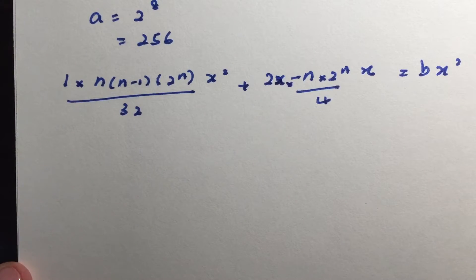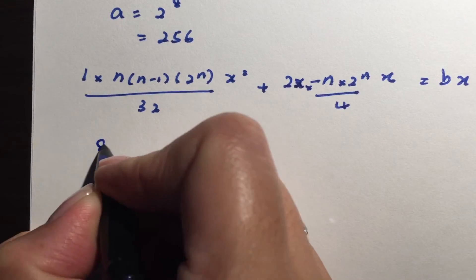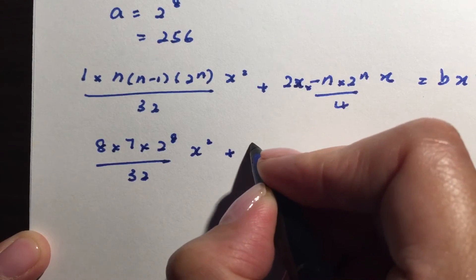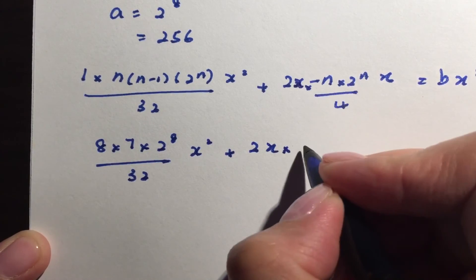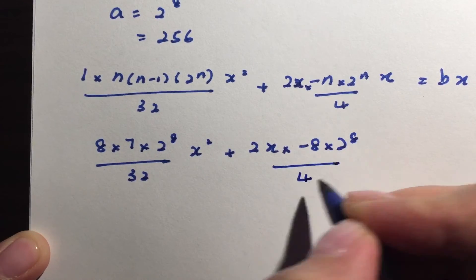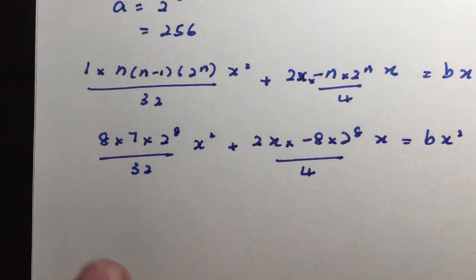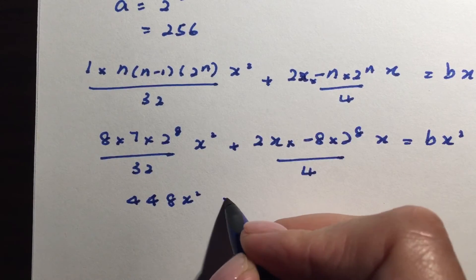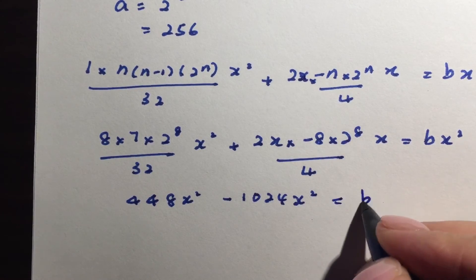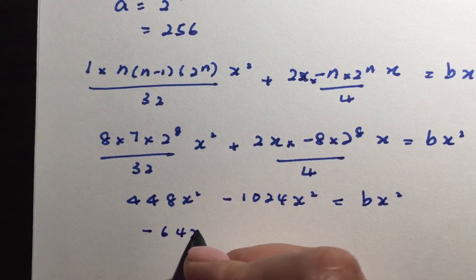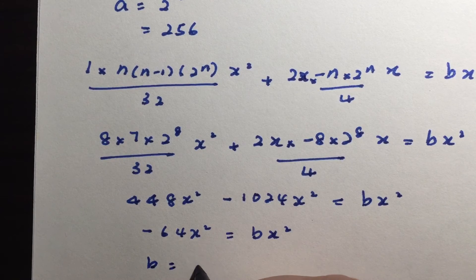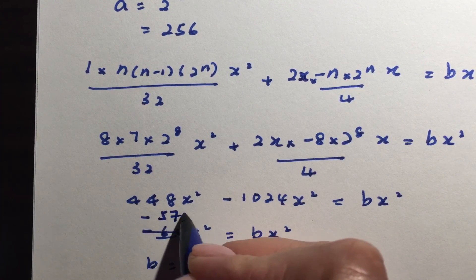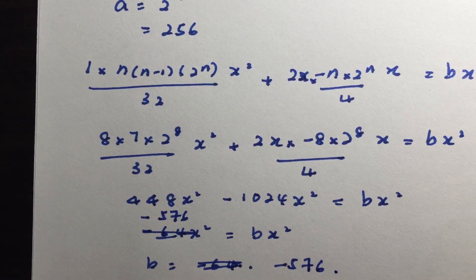Now again, remember, we have already found out what is our n term. So we will be able to replace this as 8 times 7 times 2 to the power of 8 over 32 x squared plus 2x. So this is 2x times negative 8 times 2 to the power of 8 over 4 x equals to bx squared. So you can use your calculator to evaluate. You'll be able to get this one as 448 x squared and this one will give you negative 1024 x squared. So in other words, you'll be able to get is negative 64 x squared is equals to bx squared. So your b is actually negative 64 x squared. Oh, sorry. This is negative 576 x squared. So your b value is negative 576. Sorry for the error.